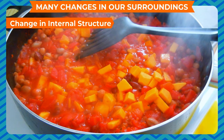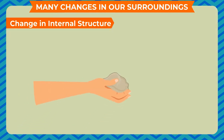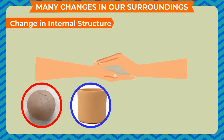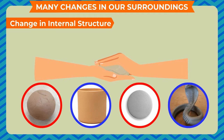Change in internal structure: when we cook food, the structure of the molecules in food changes and a new substance is formed. Take some wet clay and put it in your palm; make different shapes such as a ball, a cylinder, a circular disc, a snake-like shape, and more. You see that you can make different shapes from a single substance — wet clay. In this activity you can bring the clay back to its original shape.